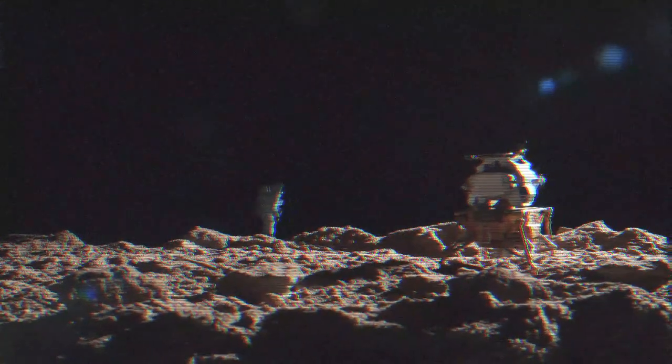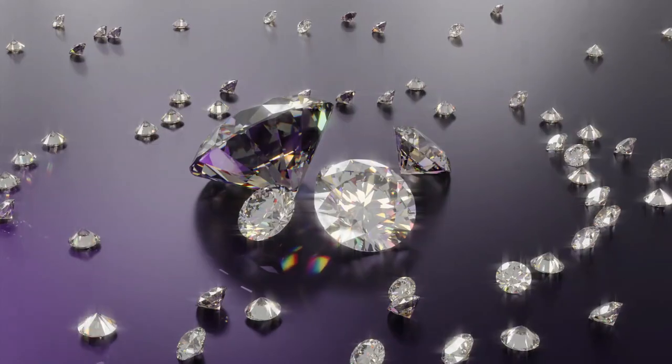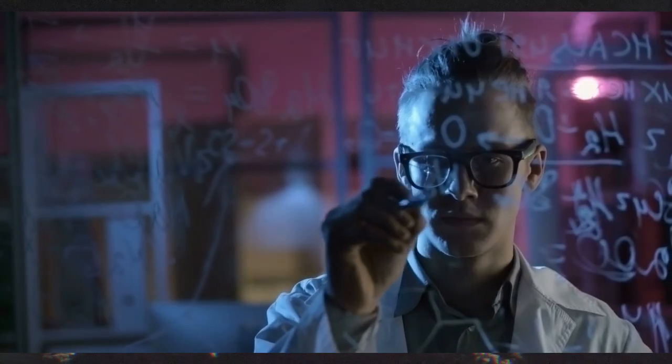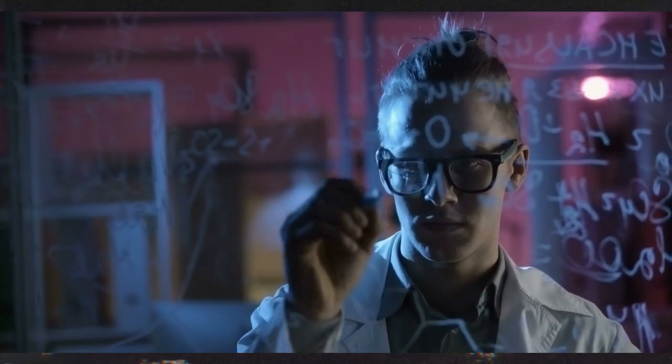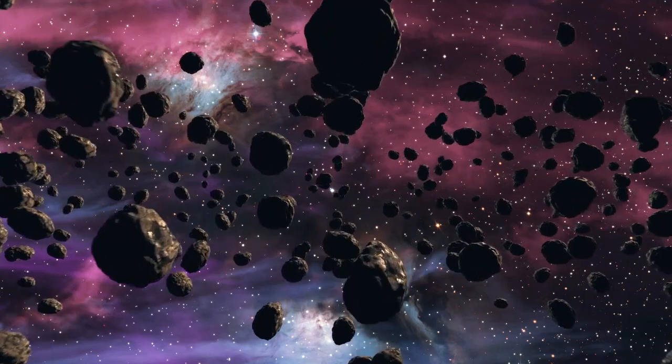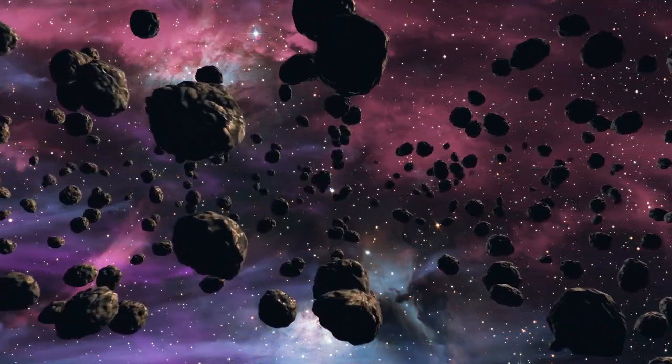Fact number three, there are planets made of diamond. Yes, you heard that right. Scientists believe that there are planets out there that are made almost entirely of carbon, with a thick layer of diamonds covering the surface.